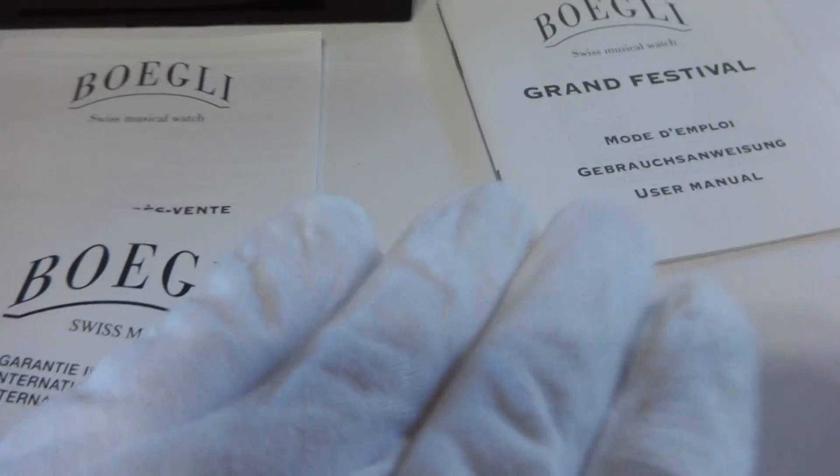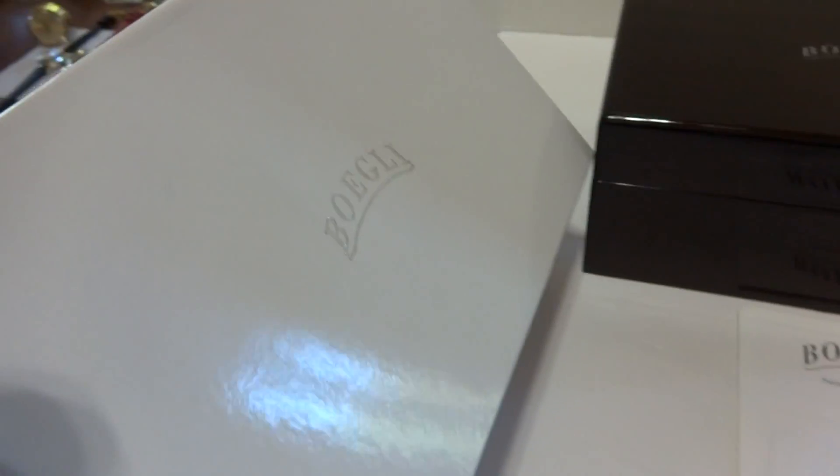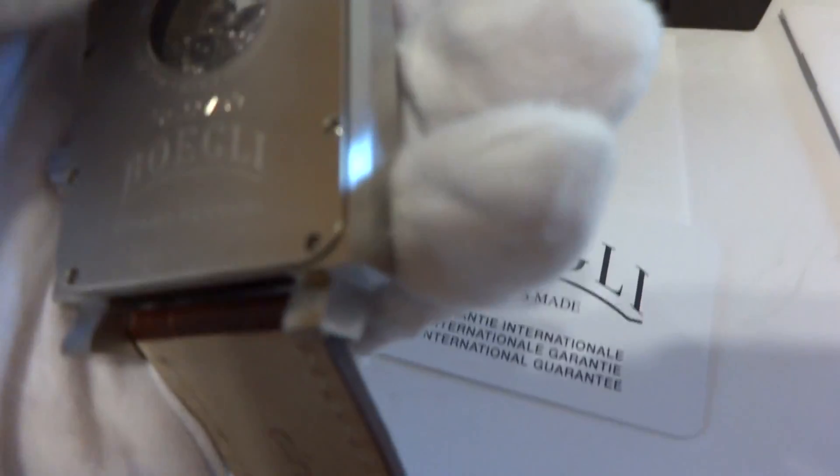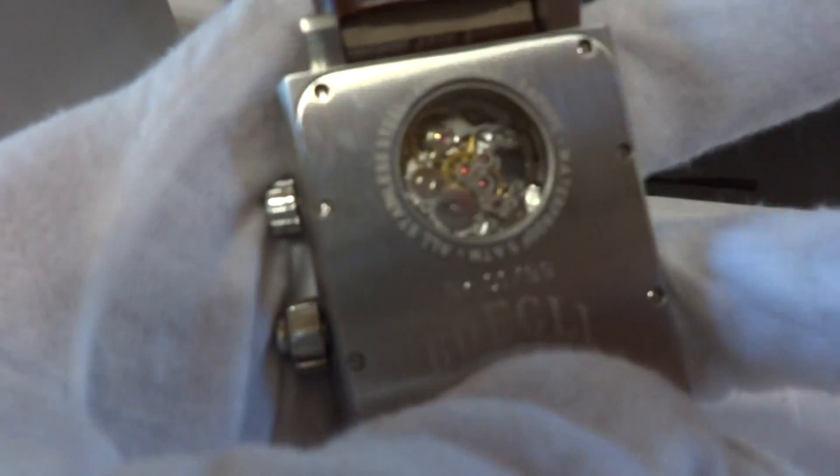All of the papers, the guarantee card, the outer box, and I did remove the protective plastic coating off the back so you can see the skeleton movement.